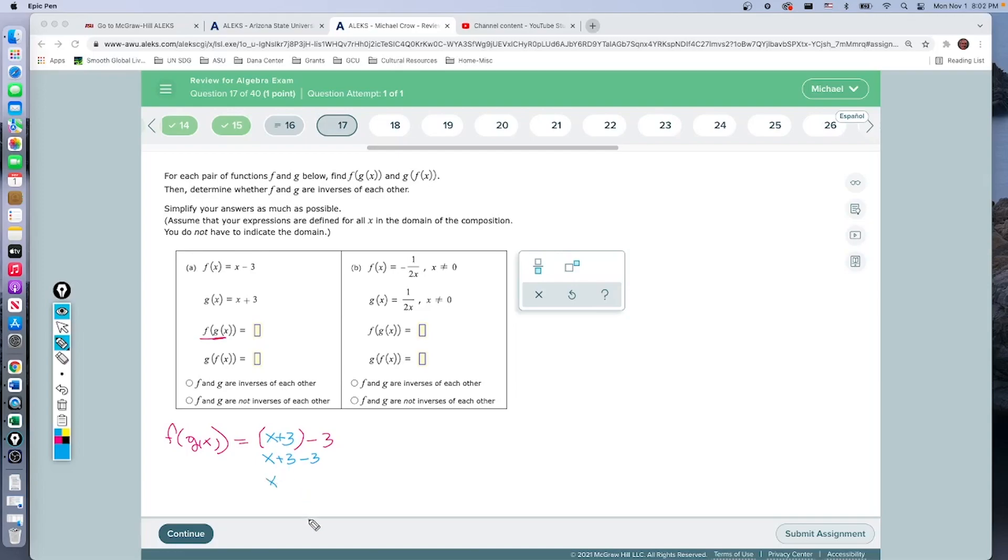This ends up being just x, so the first composition shows that f composite g of x is x. We got back to where we started—we started at x, we ended up at x. Now we do the test to see if g of f of x works, and yes, you're probably thinking it will work just fine, and it will.